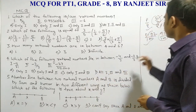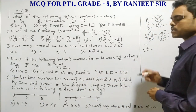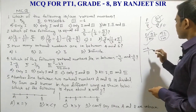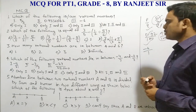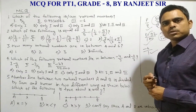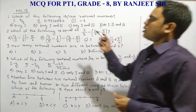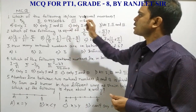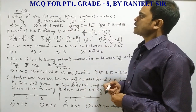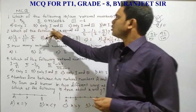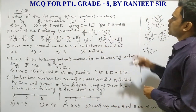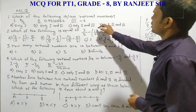For the third option, -6 is of course a rational number because you can write it in the form P/Q as -6/1, and this denominator is not equal to 0. So options 1, 2, and 3 — all three are rational numbers, and that is why the correct option is 'all 1, 2, and 3.'